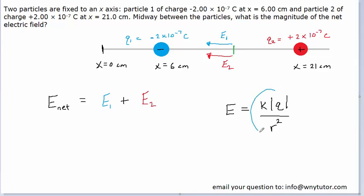We're going to be following this equation for each electric field. So for example, for the electric field produced by particle 1, we would have K multiplied by the magnitude of Q1 divided by the distance from Q1 to this midpoint squared. We'll talk about that distance in just a moment.